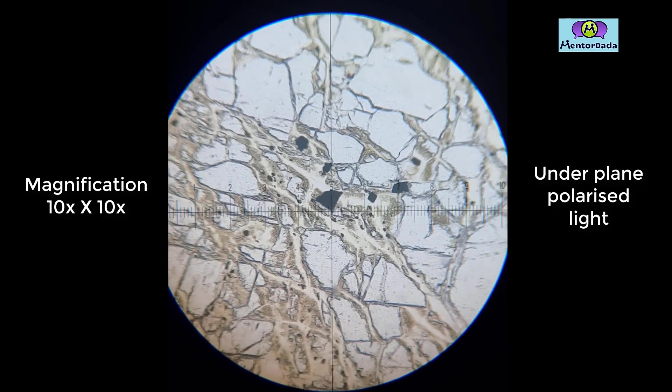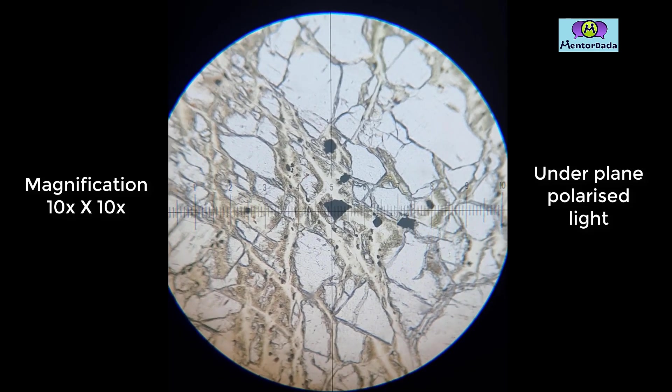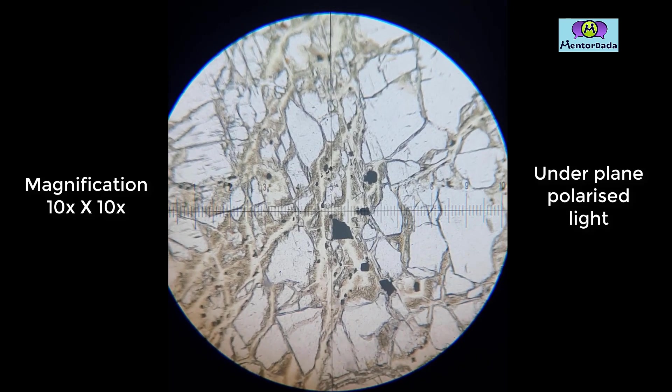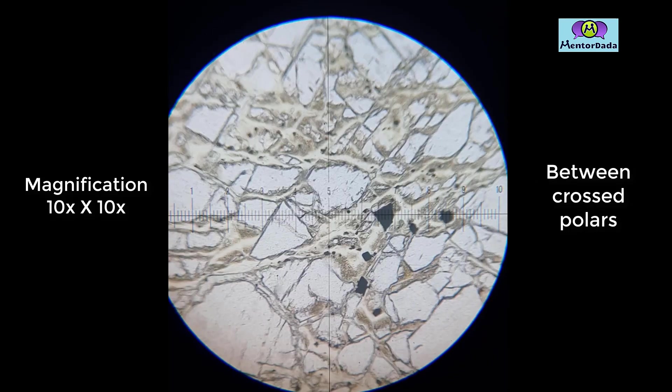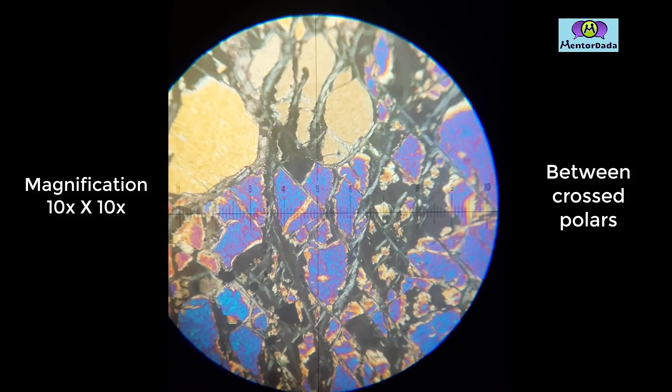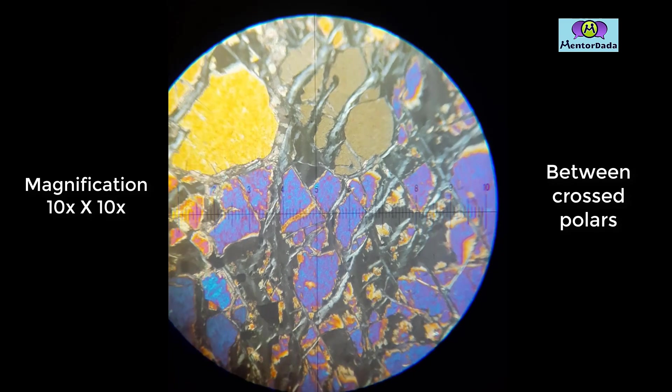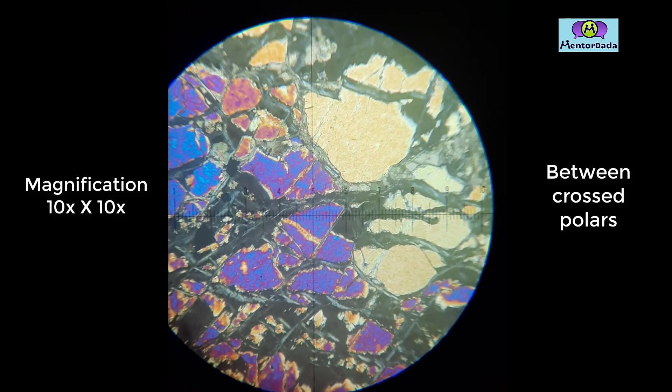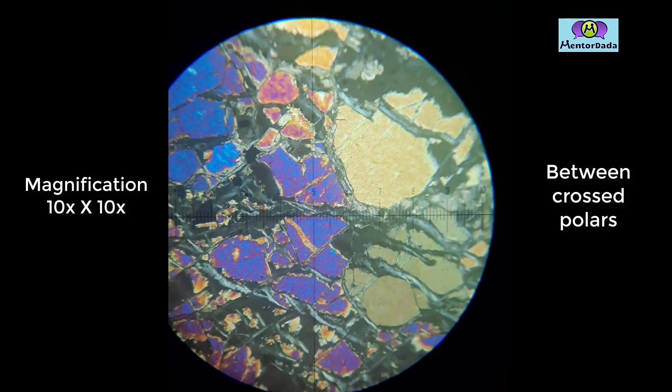We can identify its characteristics under the reflected light microscope. After insertion of the analyzer, we can see very high order variegated interference color, and the birefringence of this mineral is very strong.